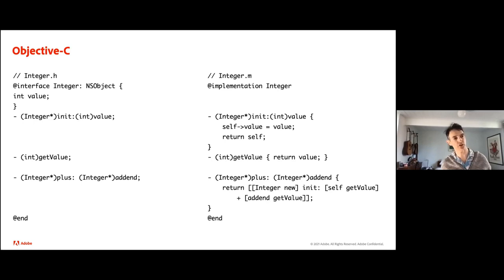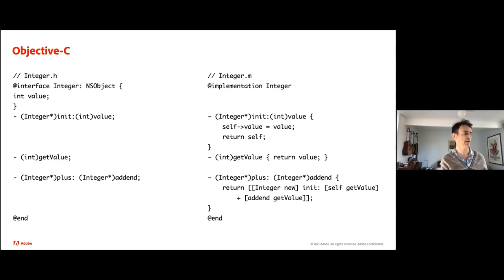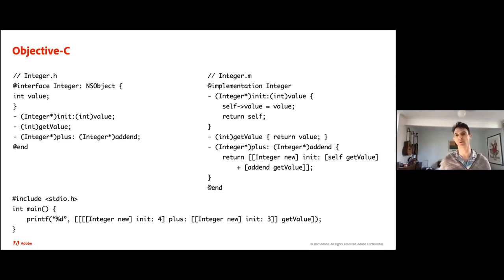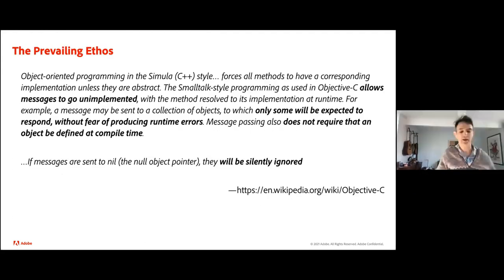In the main function, you can see infix-style method invocation using square brackets — for example, constructing an Integer object with four, calling plus with an Integer of three, then calling getValue on the result and printing it. This kind of infix name notation was a highly valued property of Objective-C for its community.